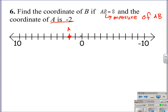So we know it is 8 units long. So we start at the point A, and we are going to count 8 units to the right. 3, 4, 5, 6, 7, 8. So that is one possible coordinate for B.